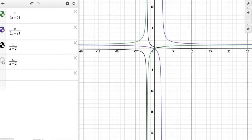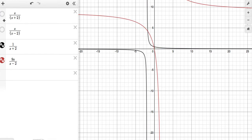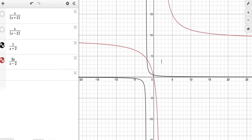For example 2, the equation was 1 over x plus 2 equals 9x over x minus 2. When we graph this, if we take a look at this graph...